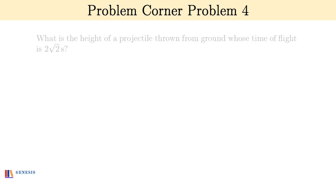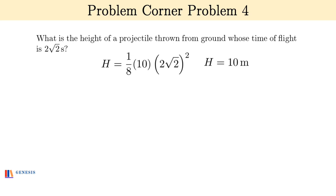First one: what is the height of a projectile thrown from the ground whose time of flight is 2√2 seconds? H = ⅛gT² and so H is 10 meters. Done.